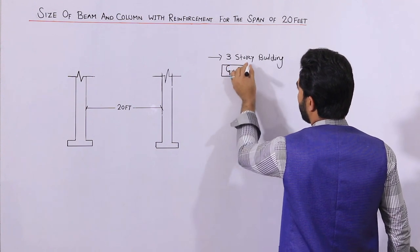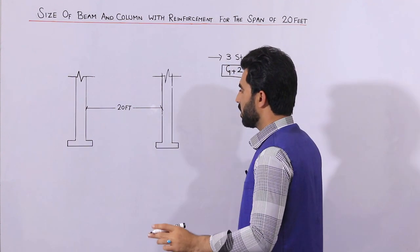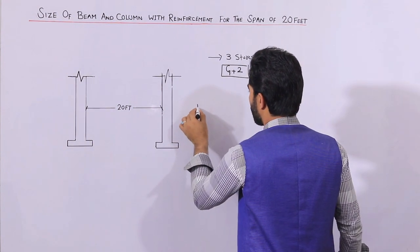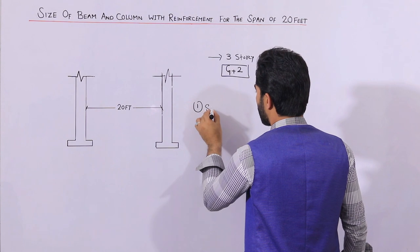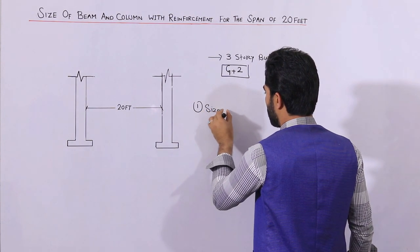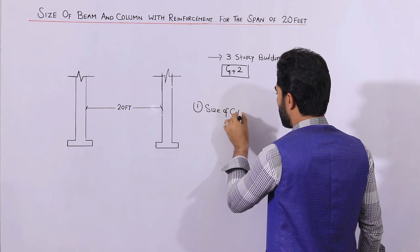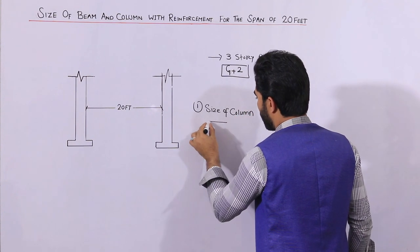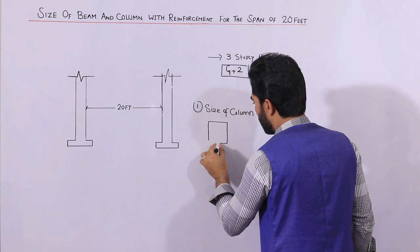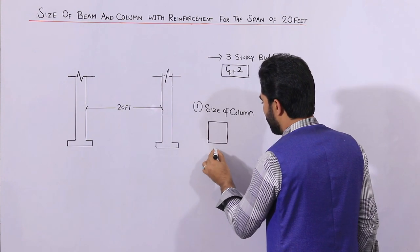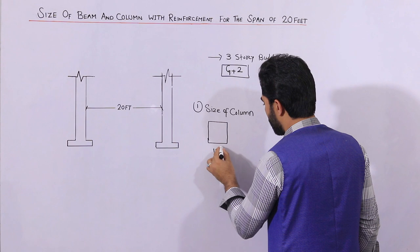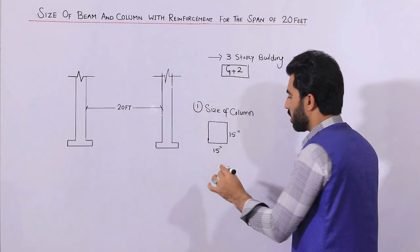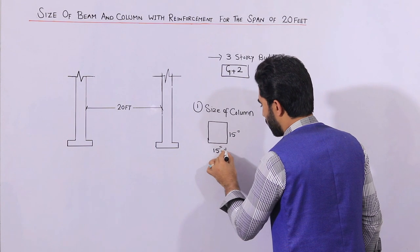If the span is up to 20 feet, the size of the column should not be less than 15 by 15 inches. This is the minimum column size — a square column.